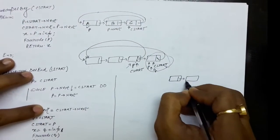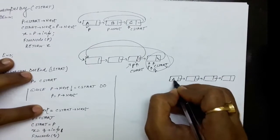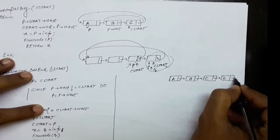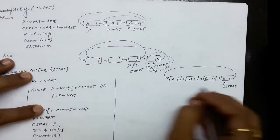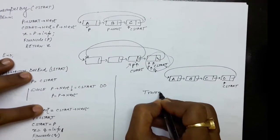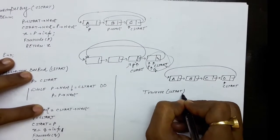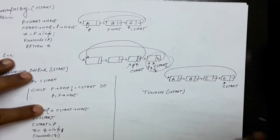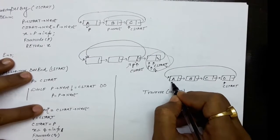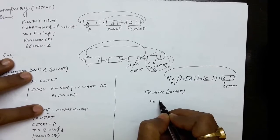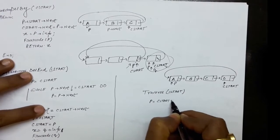Now moving to the traversal operation. Suppose this is the linked list with information A, B, C, D at the nodes, and C start is pointing to the last node. You have to print the information of all nodes. The traversal function receives the address of the last node, C start. To start from the first node, set P equals to C start dot next.